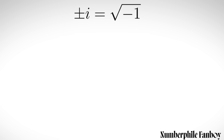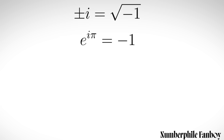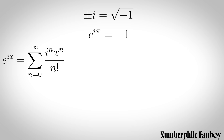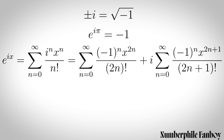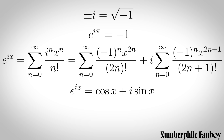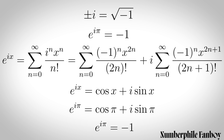If i equals the square root of -1, then e to the i pi equals minus 1. This is because e to the x equals an infinite series called the Maclaurin series, and using e to the ix you can split the series into even and odd values of n, which gives you the infinite series of cosine x and sine x. So e to the ix equals cosine x plus i sine x, and if you plug in x equals pi you get e to the i pi equals minus 1.